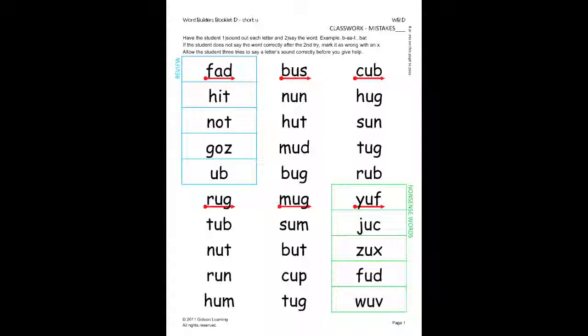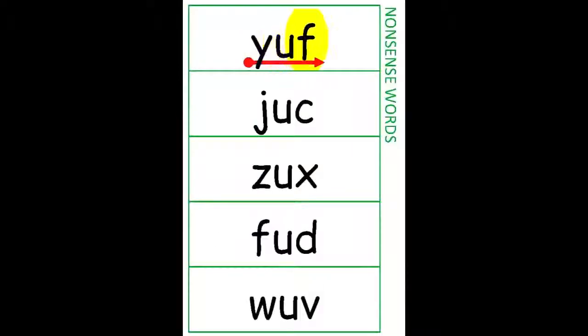Nonsense words will be seen on word lists throughout this series. Nonsense words are an excellent way to practice the decoding technique. While these are not real words, they are still just as important to practice as the rest of the word list. Have the student sound out each letter and try to read the word faster each time he reads it. The student should read the nonsense word like this: yuff, yuff.